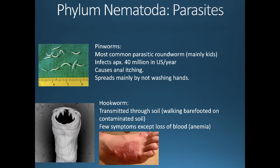Let's talk about five parasitic nematodes. First, pinworms — a very common parasitic roundworm mainly found in kids, infecting about 40 million people a year in the United States. Its main symptom is anal itching, which leads to spread through poor hand hygiene among children. Fortunately it's easily treated, and even if left untreated with rigorous hygiene it goes away in about six weeks.